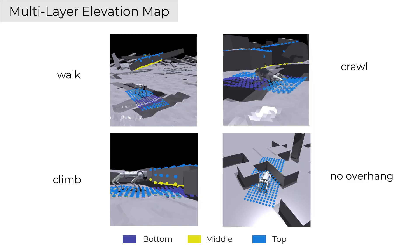In this work, we simplify the multi-layer elevation map to three layers. Examples show how the three-layer map enables robots to crawl beneath or climb over overhanging obstacles, while it reduces to a conventional elevation map when overhanging obstacles are absent.